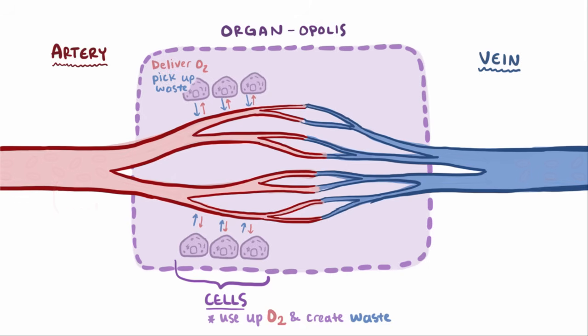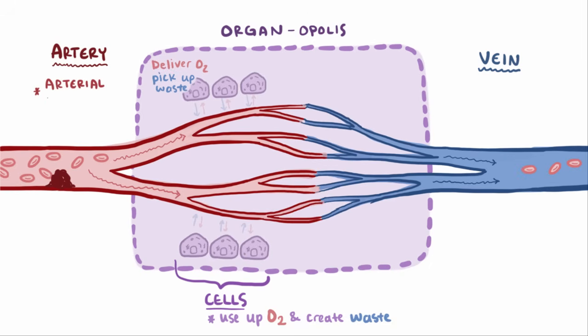One way this organ city could become ischemic is if there's some obstruction to arterial flow into the tissue. Now only a few red blood cells can get in at a time. Organopolis sees a lot less blood and oxygen and becomes ischemic.